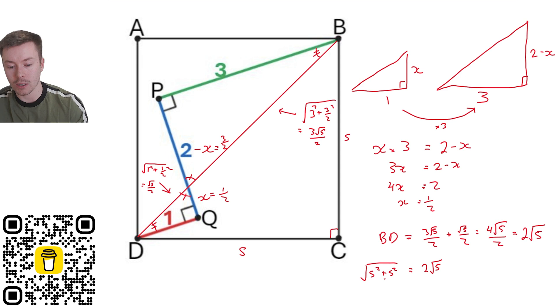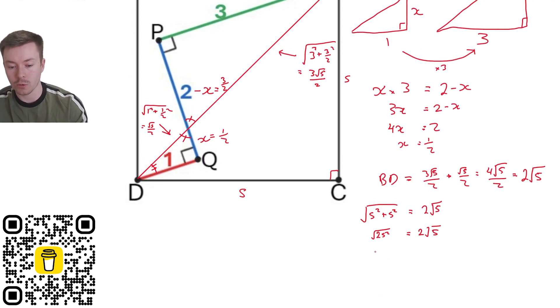If we square both sides here, actually what I'll do first is I'll simplify my S squared. So 2S squared, square root of 2S squared is equal to 2 root 5. And then if we square both sides, we're going to get 2S squared is equal to 20. Divide by 2 on both sides and we get S squared is equal to 10.